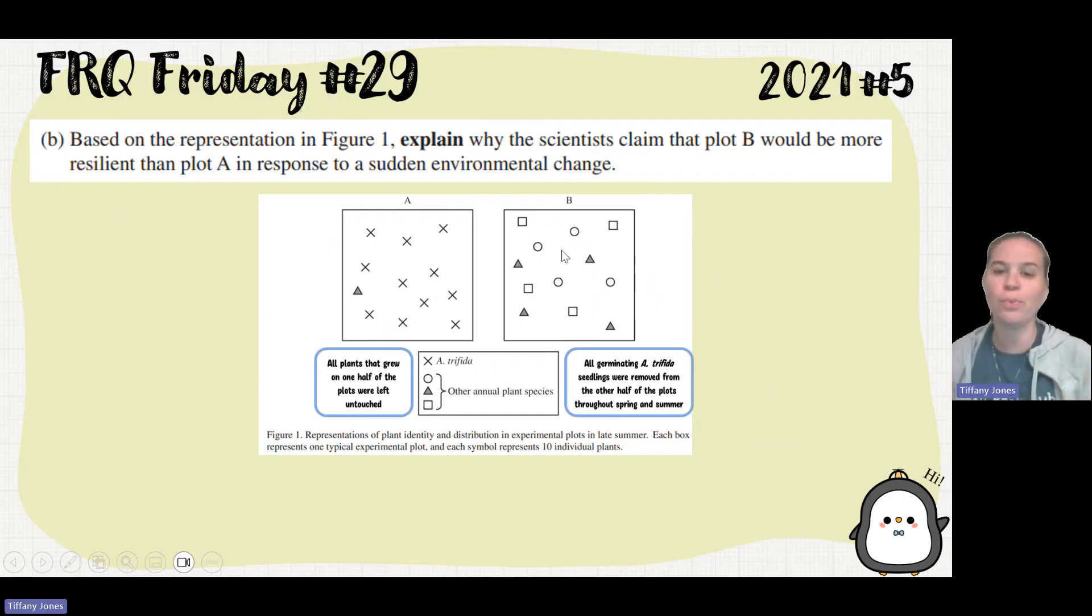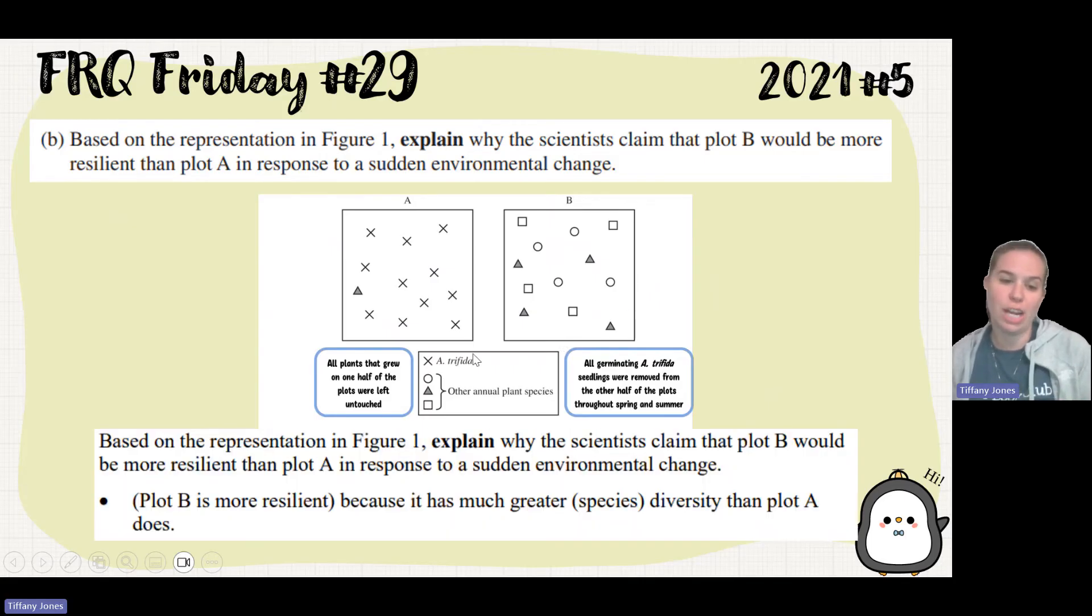Versus over here in B, I see a richness of three because there's three different types of organisms here, or species. And I also see that they're relatively the same percent, about 33 percent each. So I would say that B has more biodiversity, which leads to it being more resilient to a sudden change. Plot B is more resilient because it has a greater species diversity than plot A.